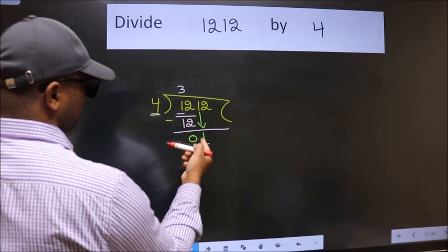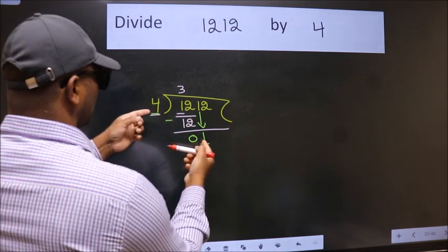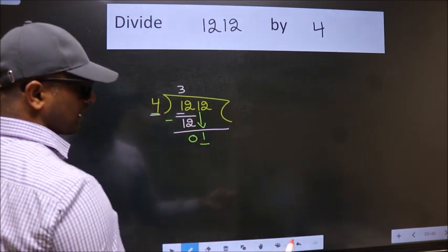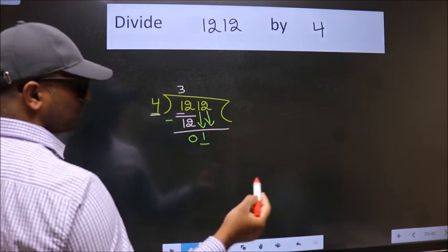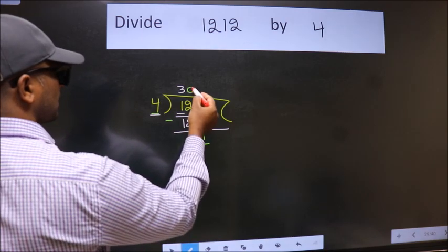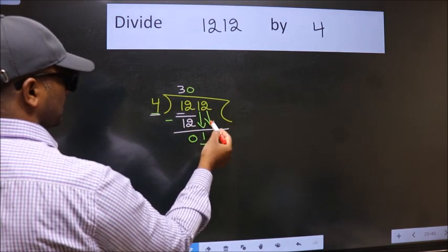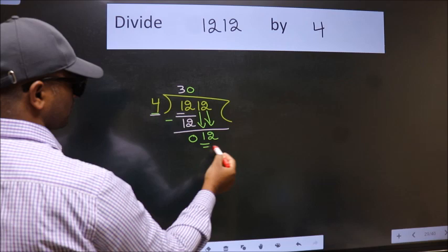Here 4. 1 is smaller than 4, so we should bring down the second number. And the rule to bring down the second number is put 0 here. Then only we can bring this number down. So 12.